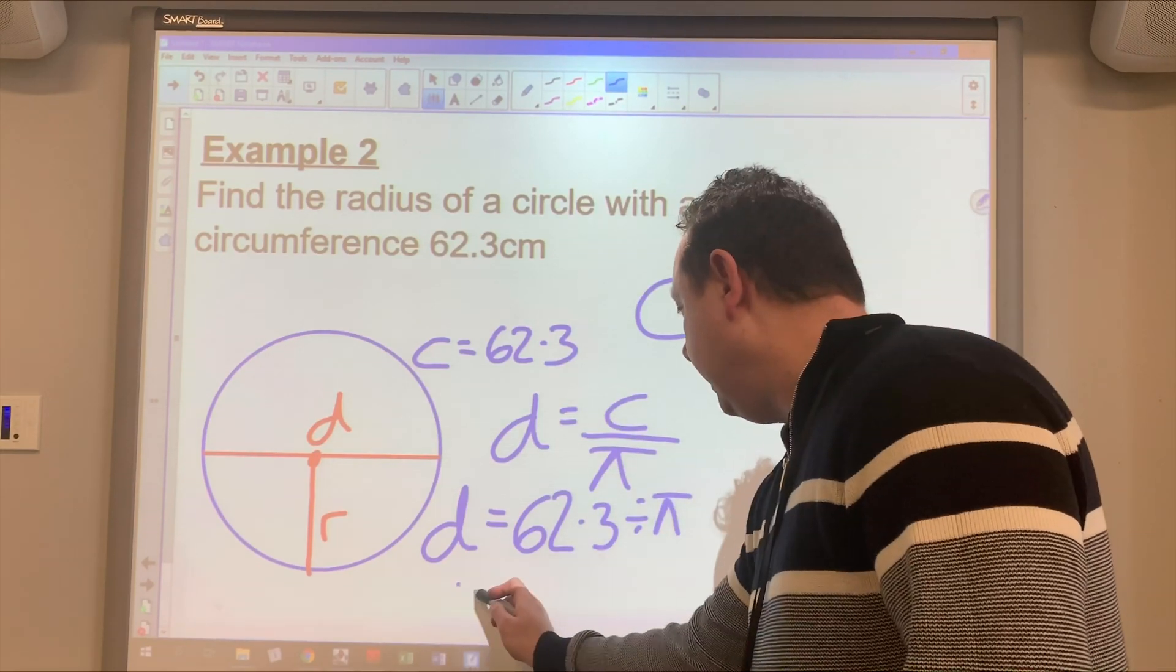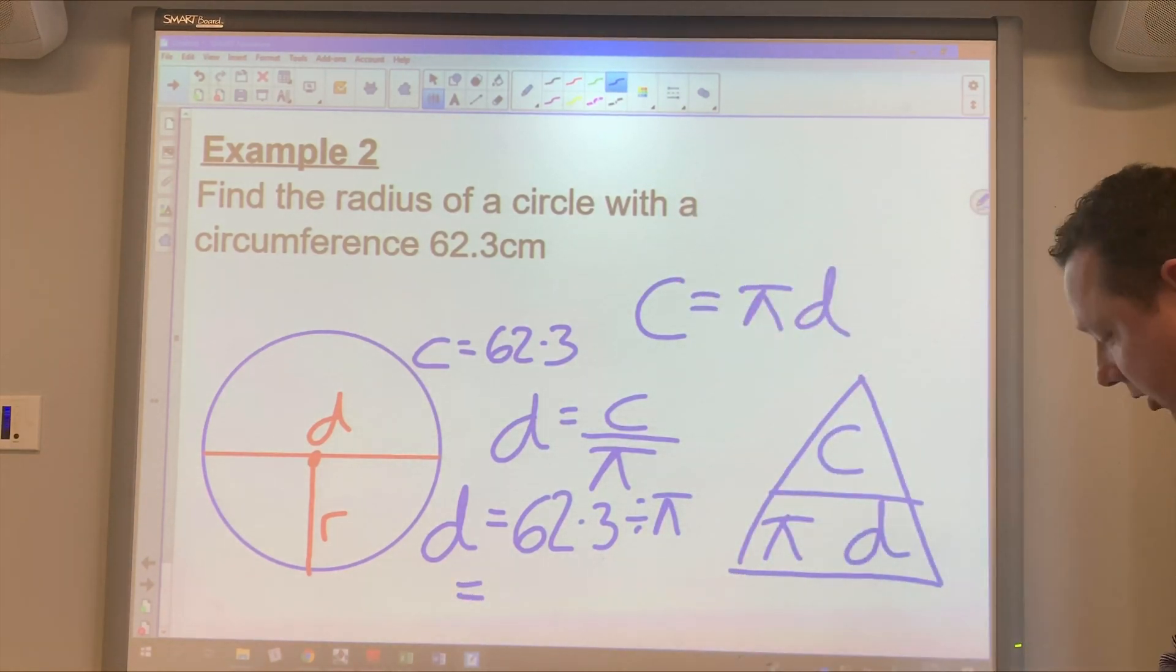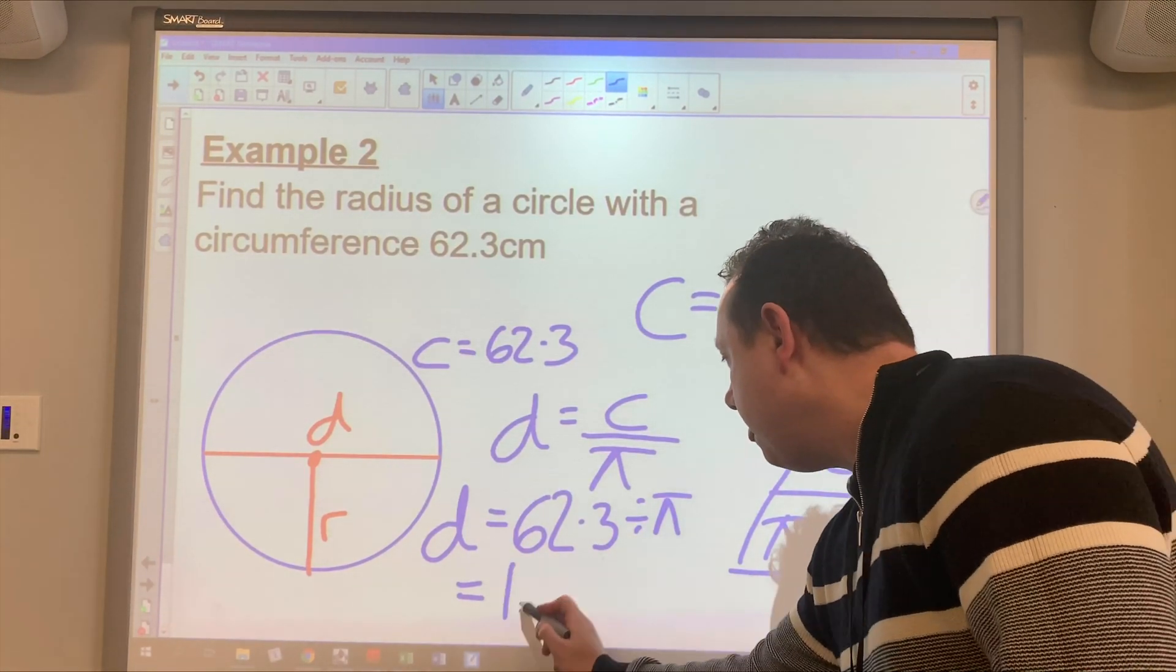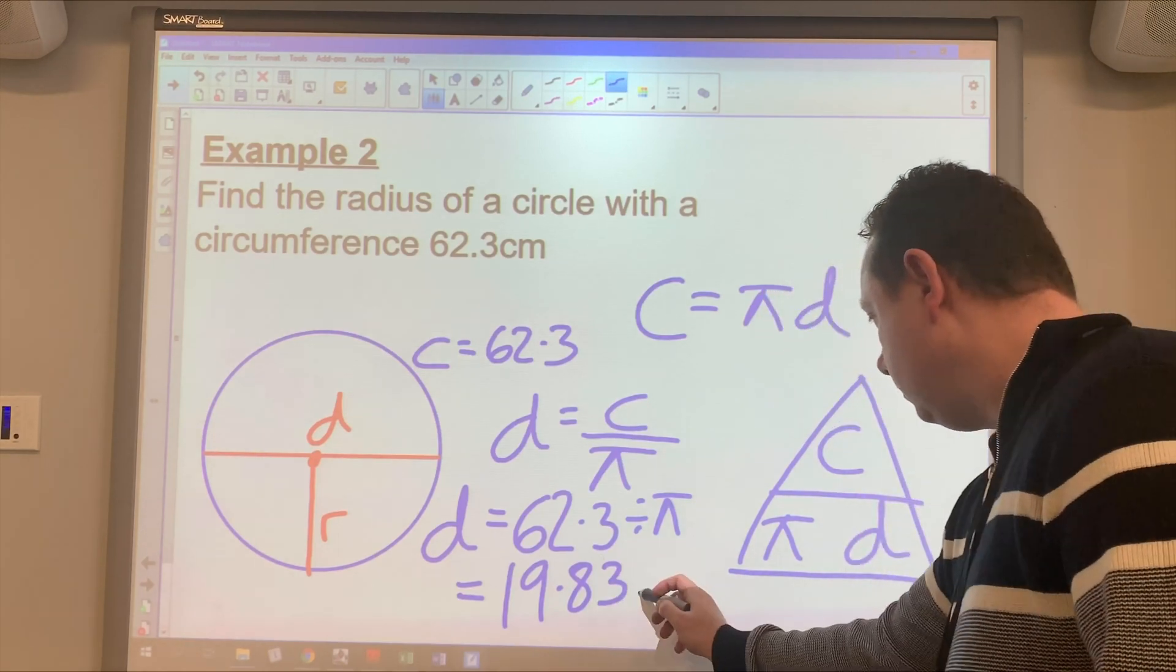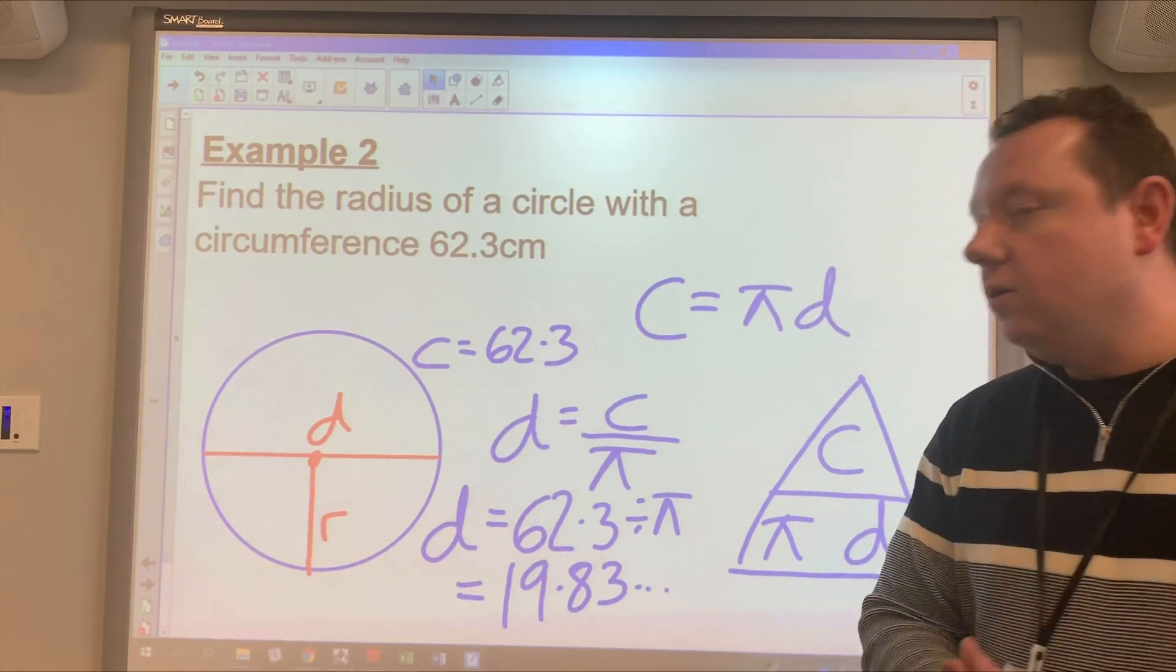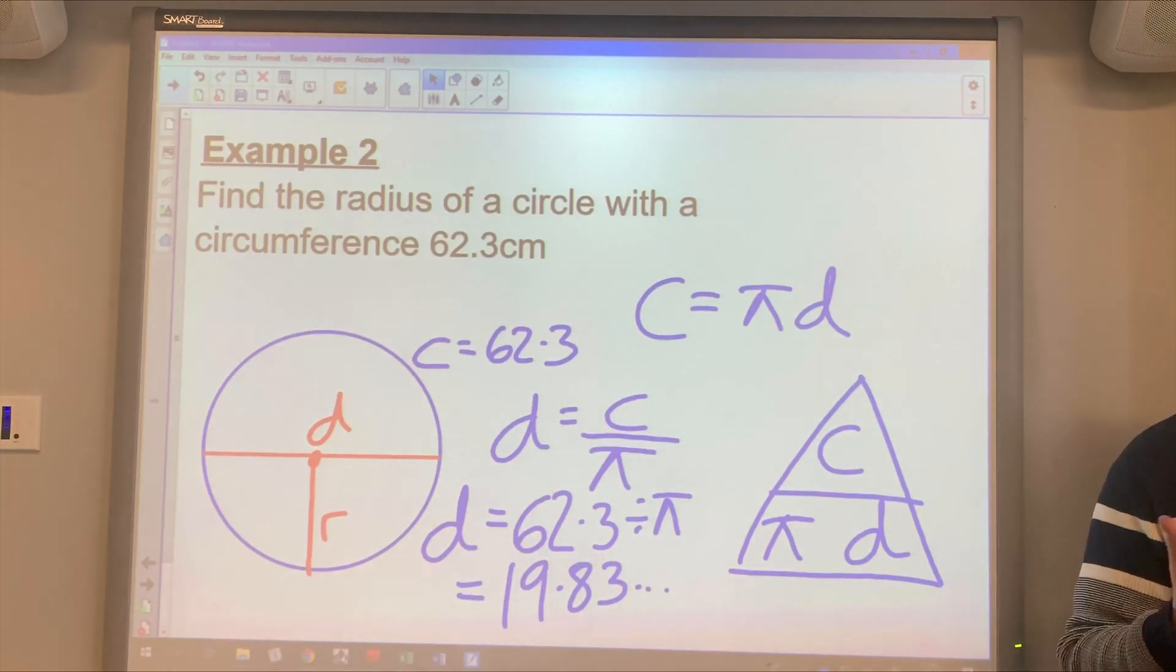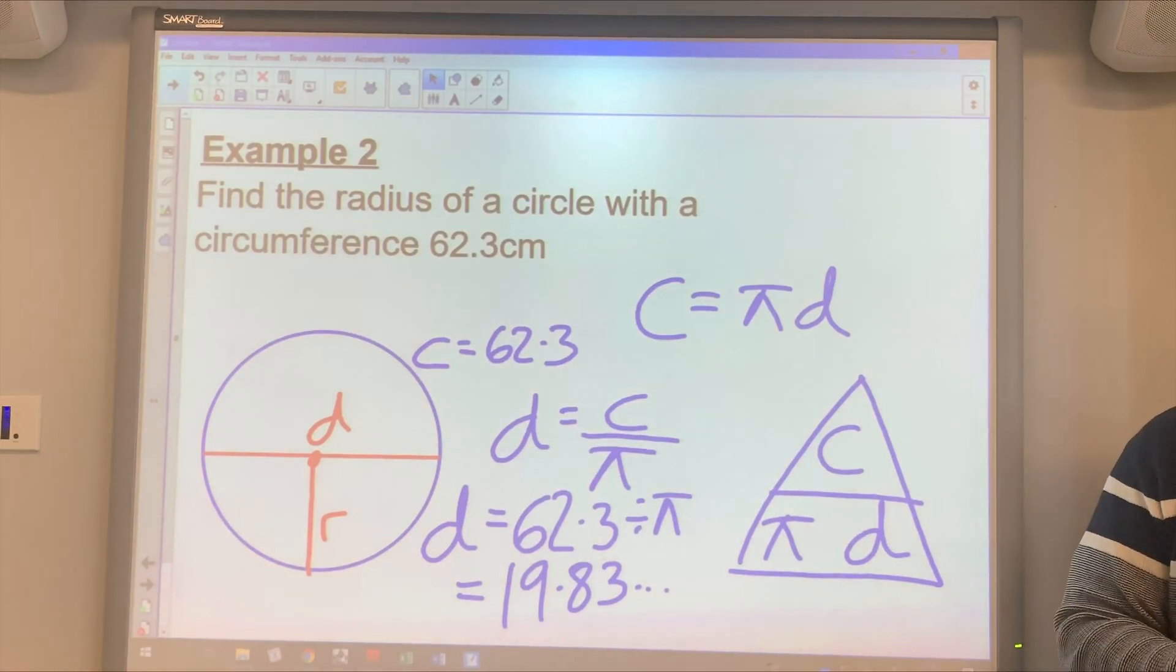Working that out in a calculator, you would get the answer 19.83. So we've now got our diameter. So we can go ahead and work out our radius by halving the diameter.